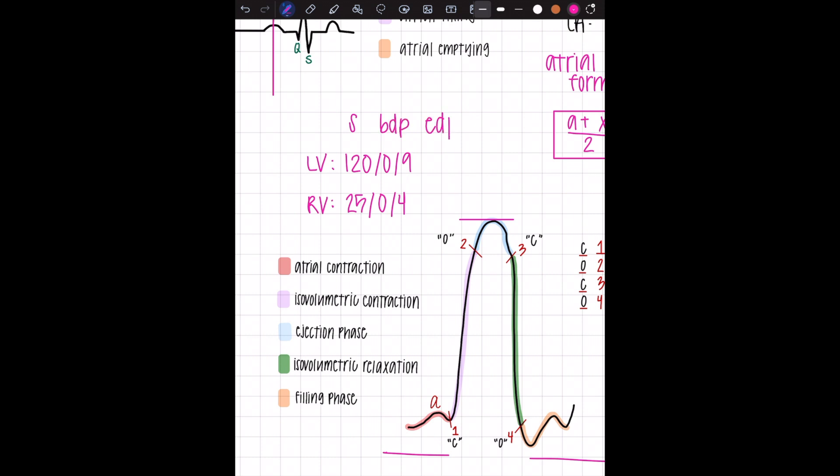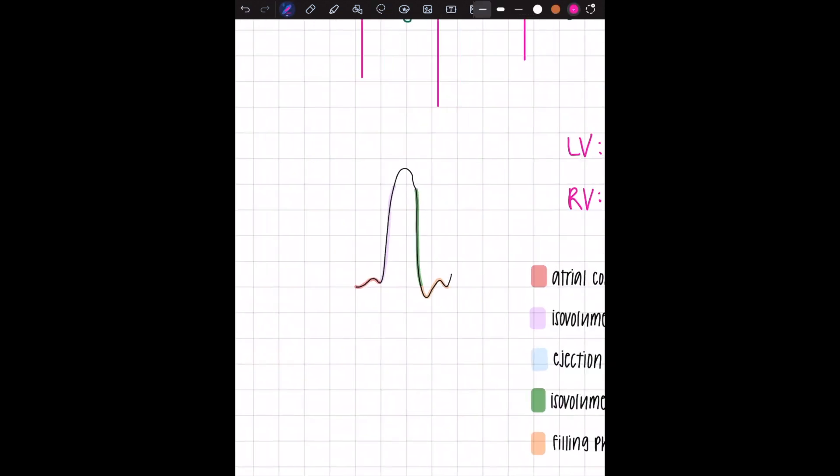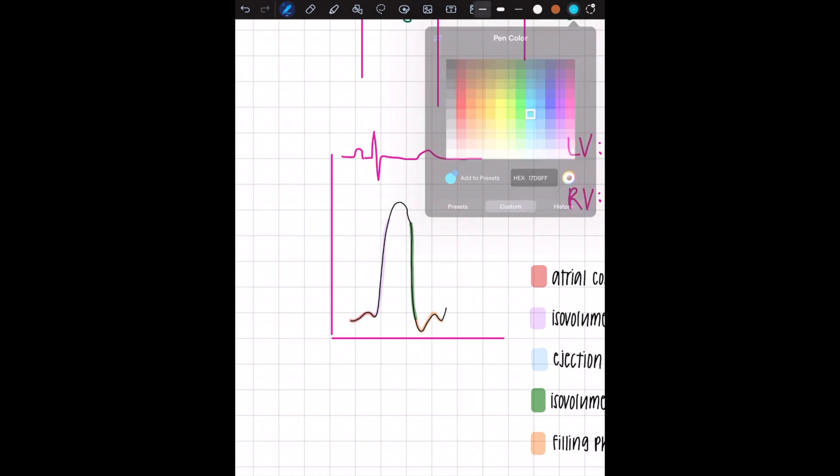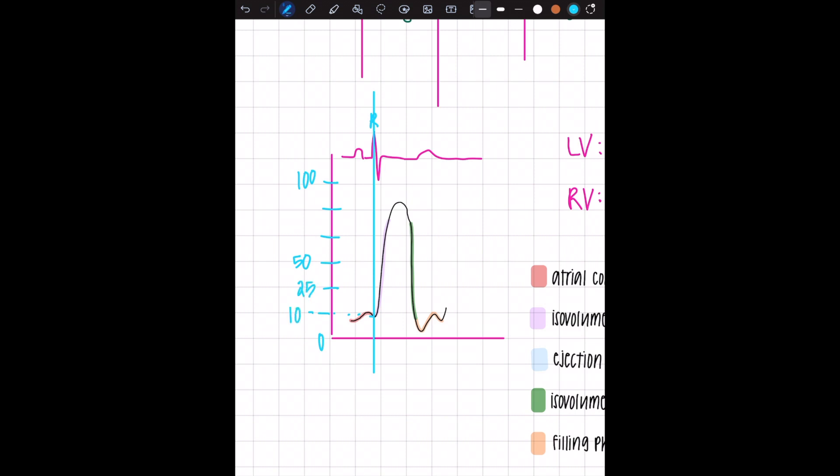Now we need to figure out what numbers are what in relation to the waveform. We had systolic, beginning diastolic pressure, and end diastolic pressure, BDP and EDP. Now let's see what this waveform looks like on a scale. You're going to need an EKG at the top, but the important part is the R wave. You need to really line up the R wave with the waveform.